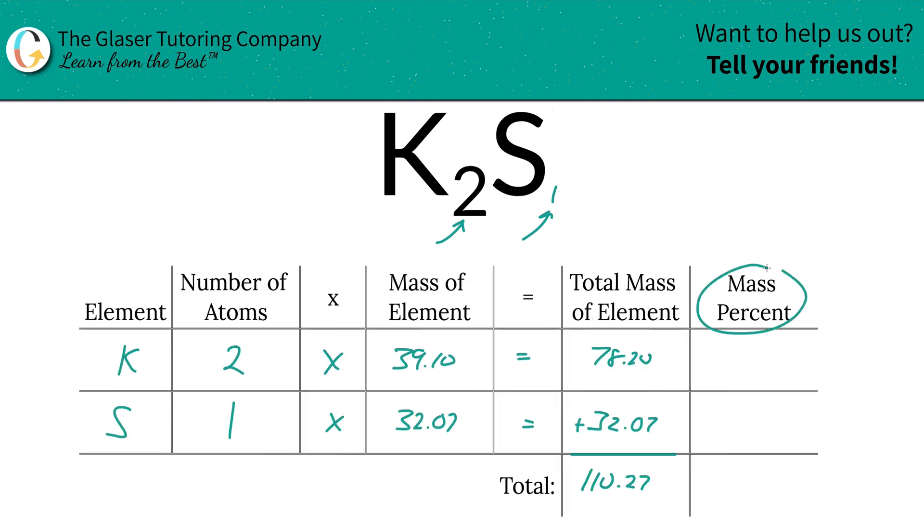So to find the mass percent of, let's say potassium, I'm going to take the total mass of that potassium, the 78.20, divide it by the entire mass of the compound, 110.27, multiply that by 100 because we need it in terms of a percent. This is part over whole—that is a fraction. Once you multiply that by 100, you basically turn it into a percent. So the percentage here is going to be roughly 70.92 percent, and that's the percent of potassium in potassium sulfide.